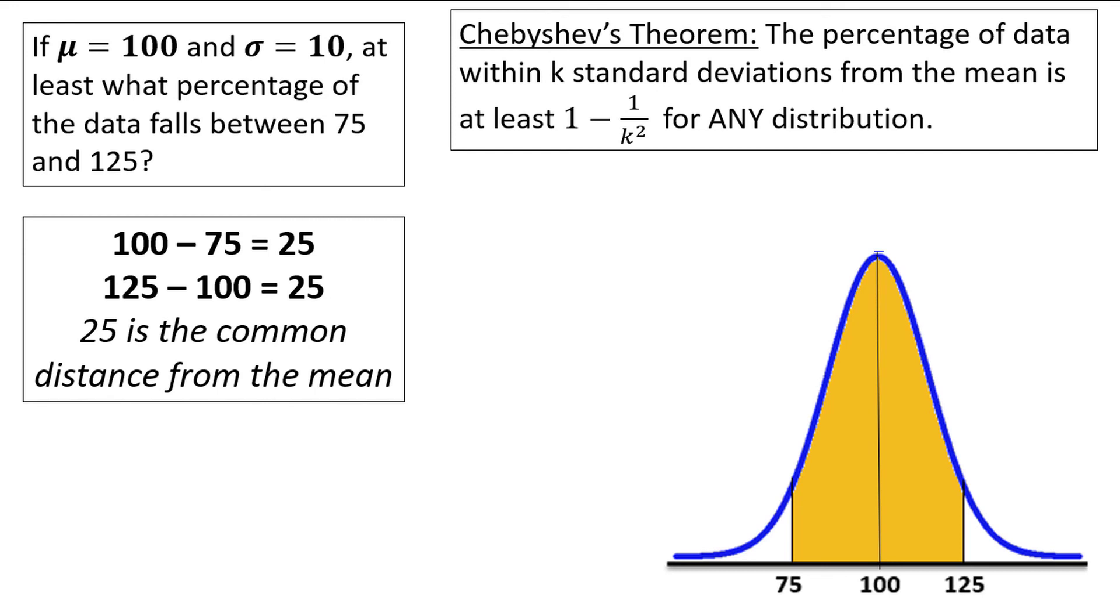Again, using the standard deviation as a unit, this is like asking how many units of size 10 do we need to make 25? 25 divided by 10 is equal to 2.5. So 25 is 2.5 standard deviations from the mean, which is our value for k.